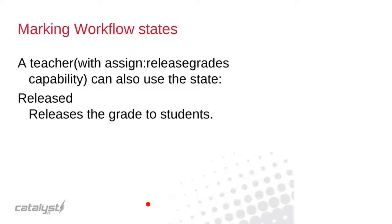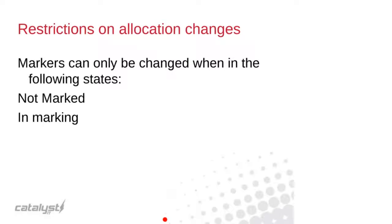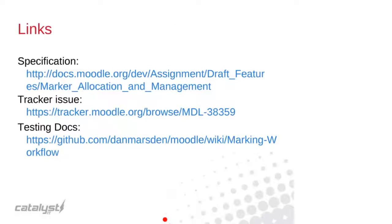The workflow state means you can make changes to a student's grade and grade all students before any grades are viewable. At the moment in Moodle, as soon as you enter a grade it's available to the student. With workflow states, you can stage that — grade everyone first, then release all grades at once. There's a separate capability controlling the 'Released' state, so if you have an internal policy that grades must not be released until a certain date, you can restrict who's able to release grades.